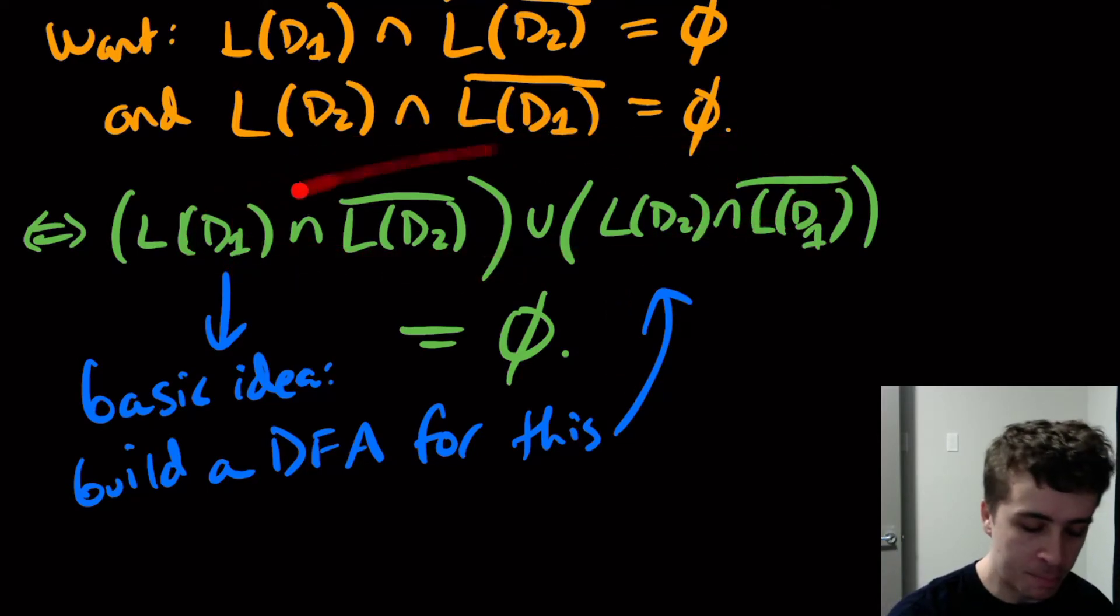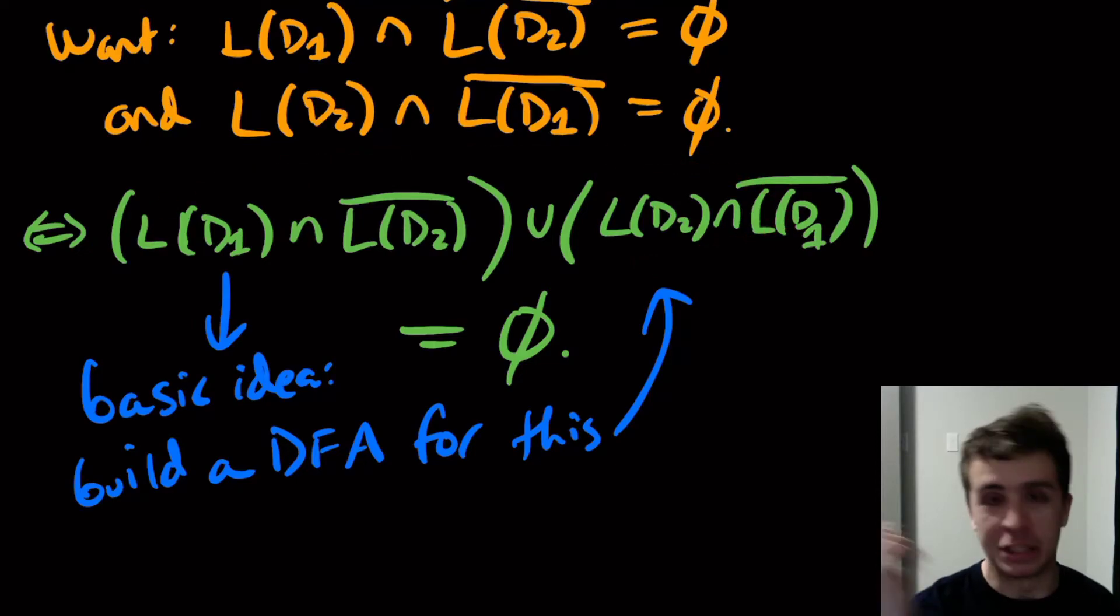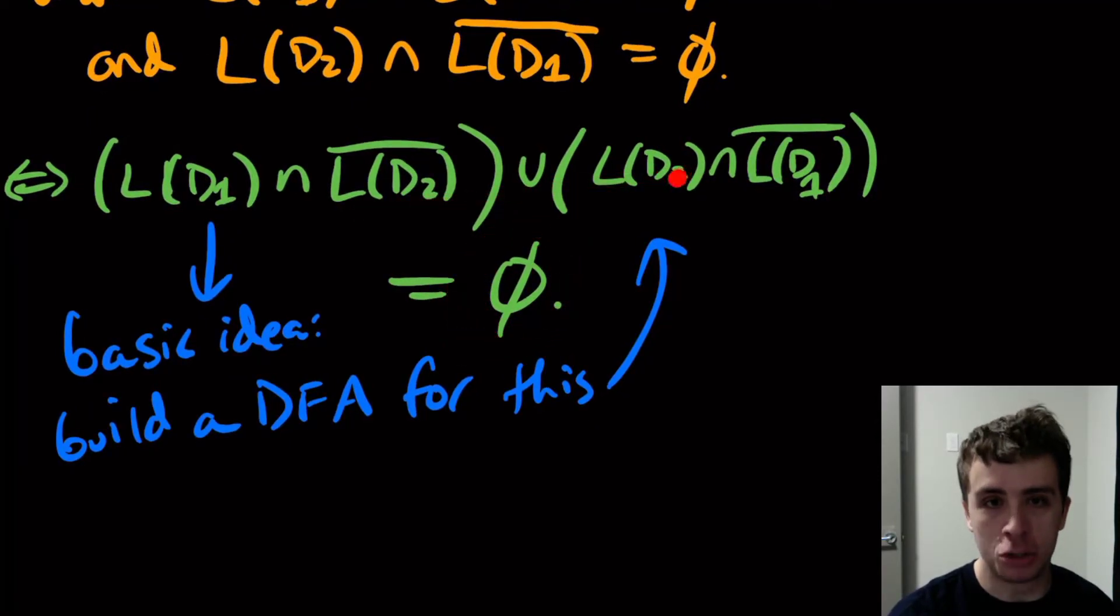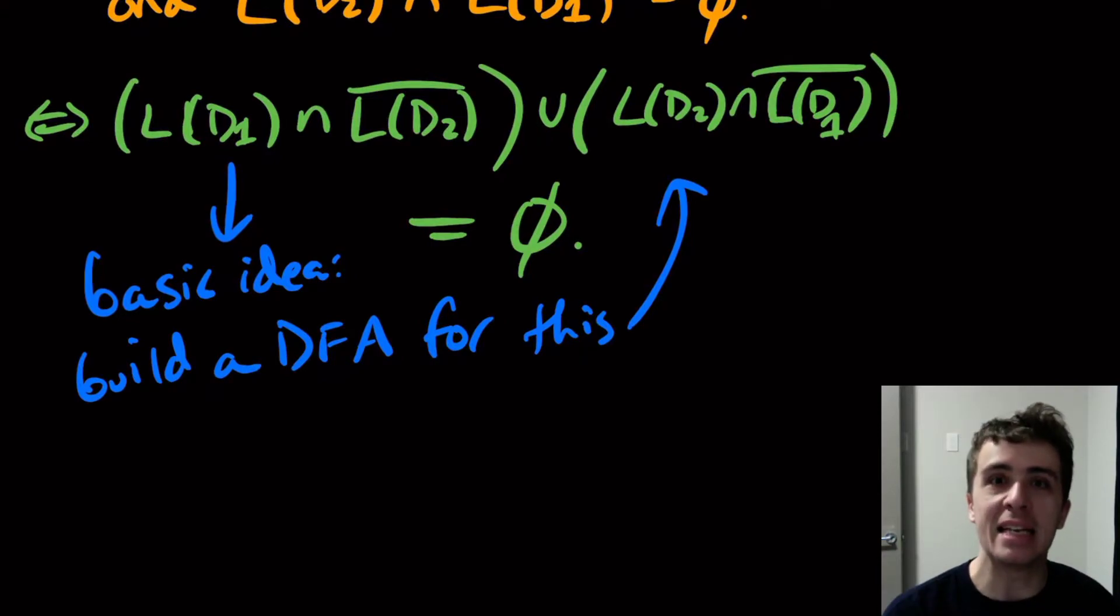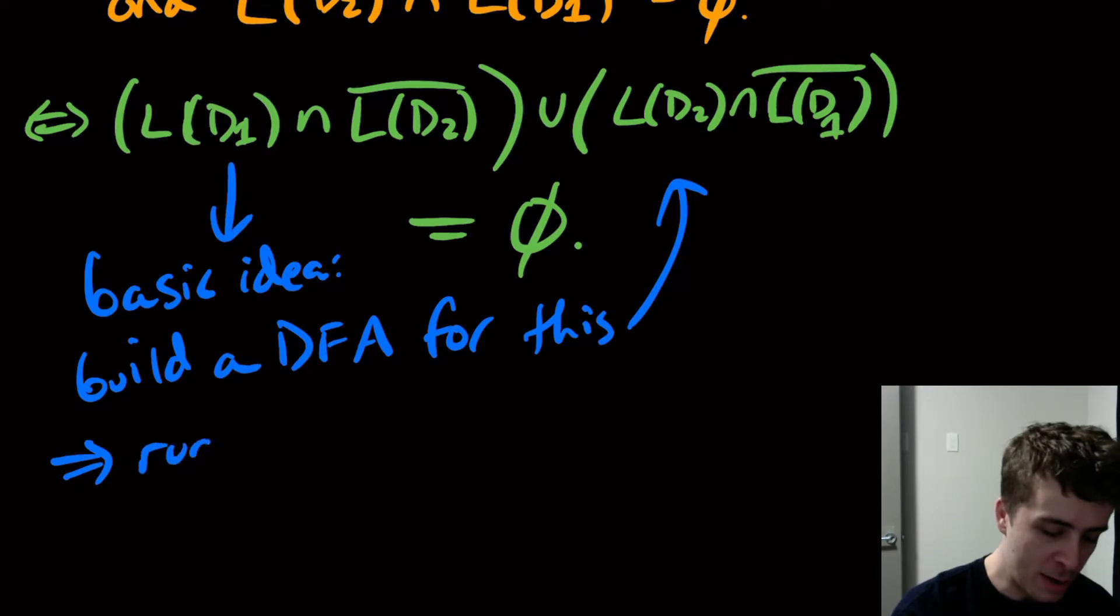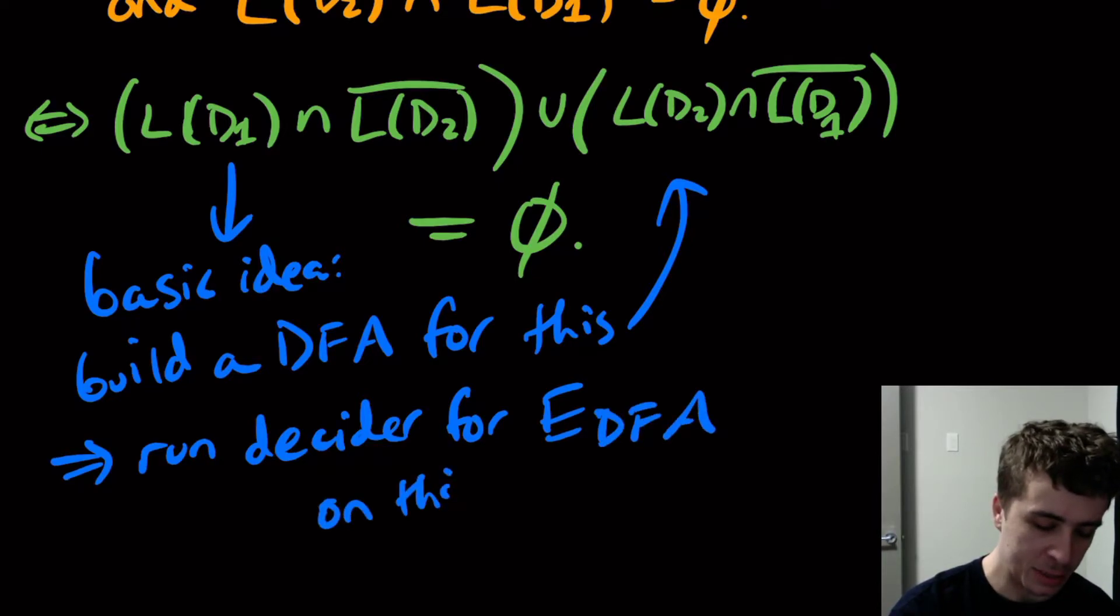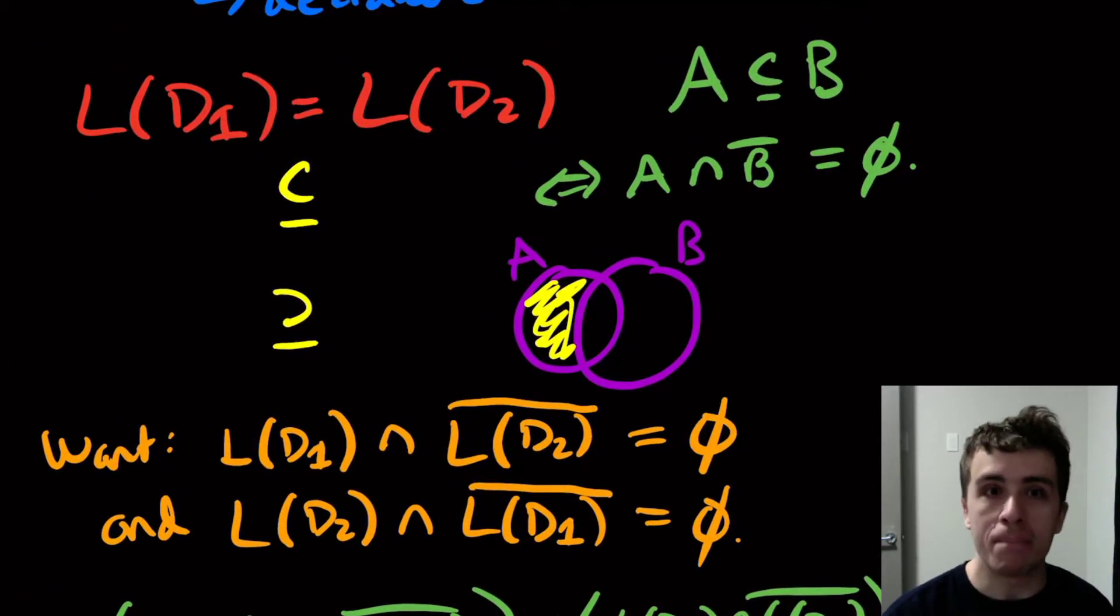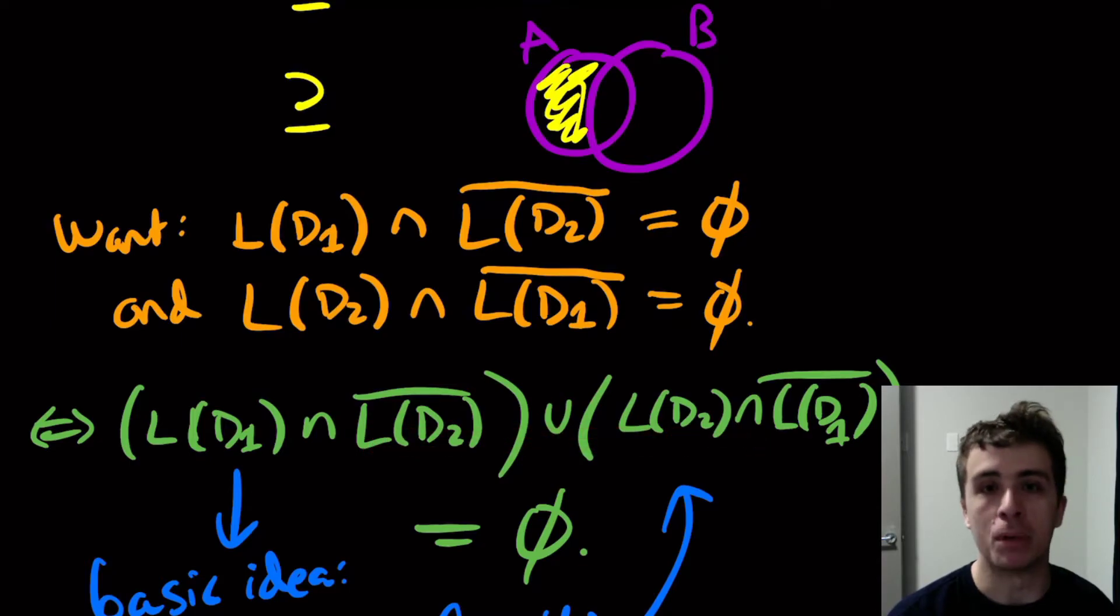As this first step, I would just make a DFA for this. Then all I just check is whether or not the language of this gigantic DFA is empty. We know how to do that because we showed before that the E_DFA problem is decidable. So then run the decider for E_DFA on this big DFA, and then report whether the answer was yes or no. This is just an observation of what does it mean for two sets to be the same.